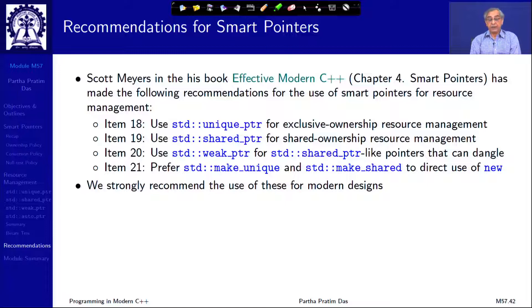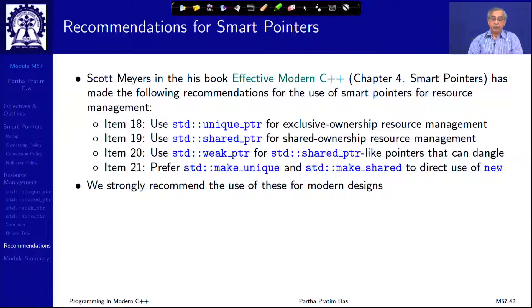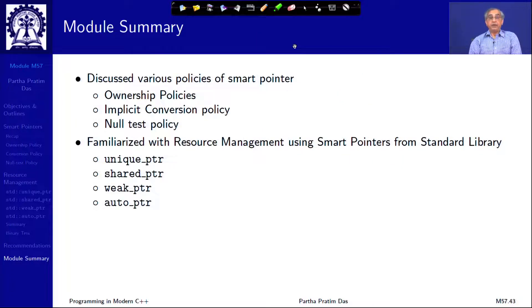It is recommended to study Chapter 4 of Effective Modern C++ by Scott Meyers, which has an excellent discussion on smart pointers in modern C++. The four key recommendations are: use `unique_ptr` for exclusive ownership, use `shared_ptr` for shared resource management, use `weak_ptr` when shared pointers can dangle, and always use `make_unique` and `make_shared` — do not use `new` directly along with these pointers. Thank you for your attention and we will meet in the next module.